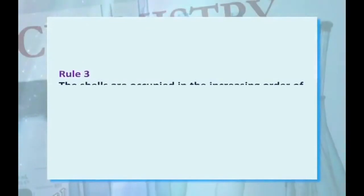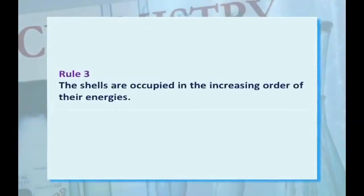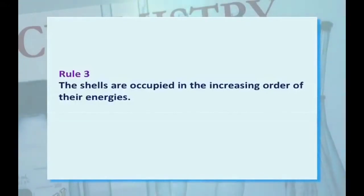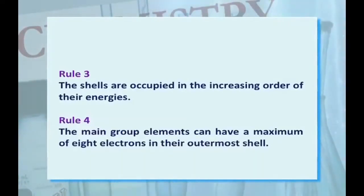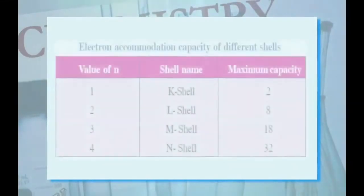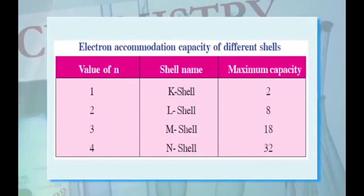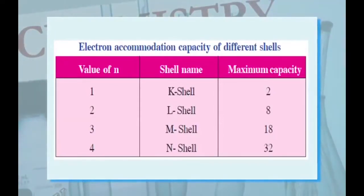Rule 3: shells are occupied in increasing order of their energies, meaning shell 1 fills up first, then electrons go to the second shell, third shell, and so on. Rule 4: main group elements can have a maximum of 8 electrons in their outermost shell. The K, L, M, and N shells have maximum electron capacities of 2, 8, 18, and 32 electrons respectively, as given by the formula.